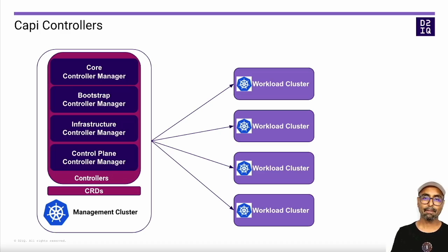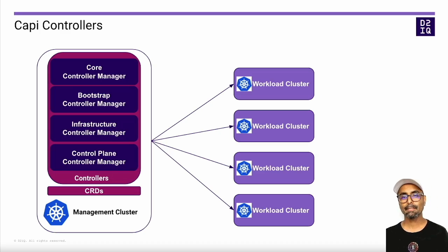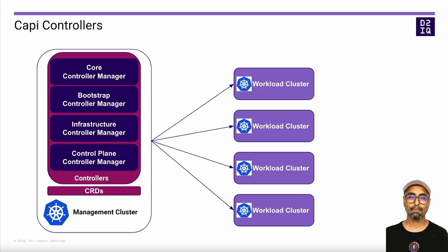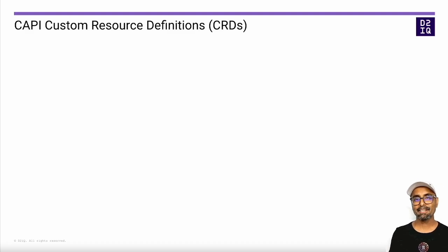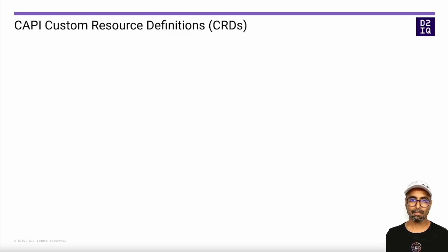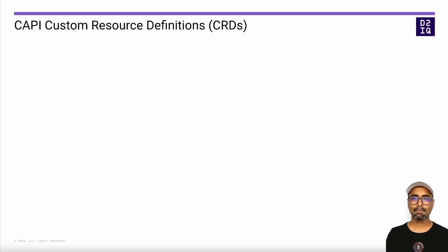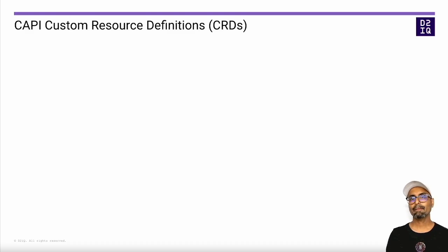Lastly, the control plane provider is responsible for instantiating the control plane. Together, these controllers orchestrate the lifecycle of one or more Kubernetes workload clusters. Now let's take a closer look at the CAPI custom resource definitions. Creating and configuring custom resources based on these CRDs is the part you'll be dealing with the most, as these form the input to the CAPI orchestration to successfully deploy and manage a cluster.